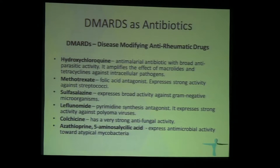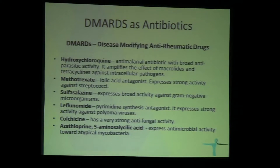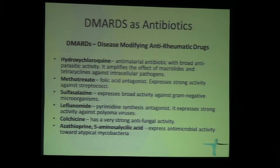Leflunomide, also known as Arava, inhibits pyrimidine synthesis but also expresses strong activity against polyomaviruses. There is a subset of patients with lupus nephritis who have persistent polyomaviruses, so leflunomide would be highly indicated in these cases. Colchicine, an old remedy for gout, has very strong antifungal activity probably comparable to fluconazole or itraconazole. Classical immunosuppressants like Imuran or azathioprine or 5-aminosalicylic acid express very strong antimicrobial activity against atypical mycobacteria. You can use disease-modifying drugs alone or in combination with antibiotics to gain desirable effects.